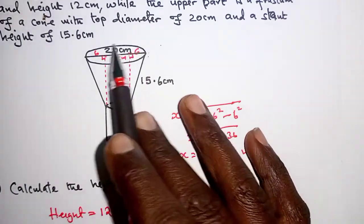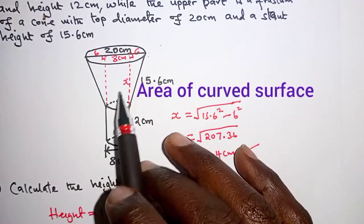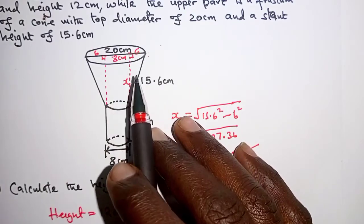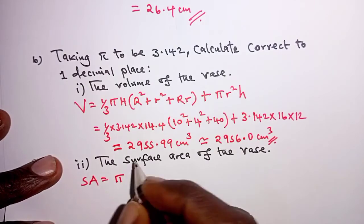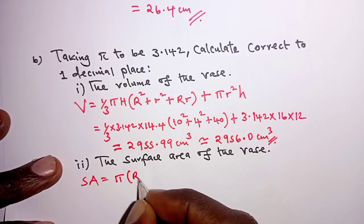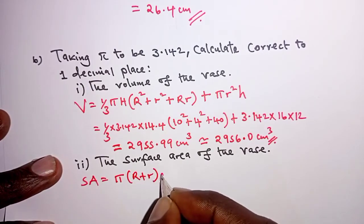we'll first begin by getting the surface area of the frustum, and the surface area of the frustum is given by pi into r plus r times d,